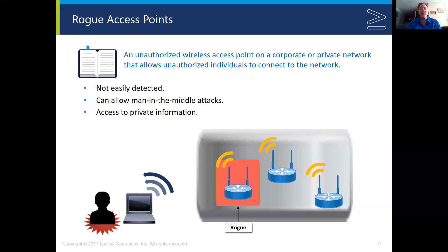Rogue access points are not easily detected, especially if you don't have good inventories. Having a good inventory of what's on your network, good current network maps, and ongoing continuous monitoring systems in place makes detecting rogue access points very difficult unless you physically see one. However, all these things — inventories, continuous monitoring, good network maps — will help you prevent these types of access points.